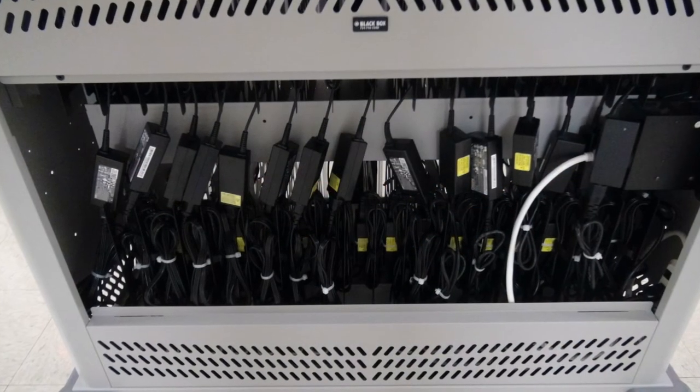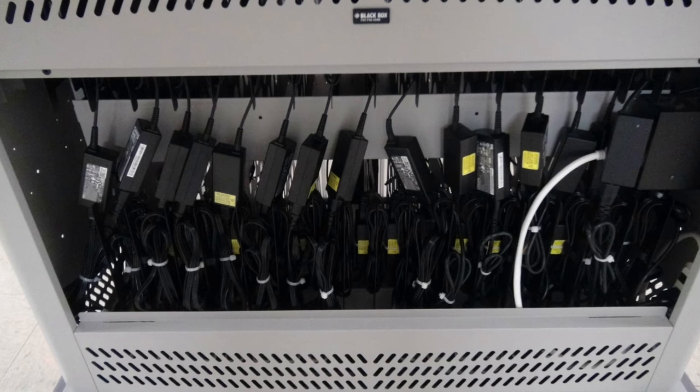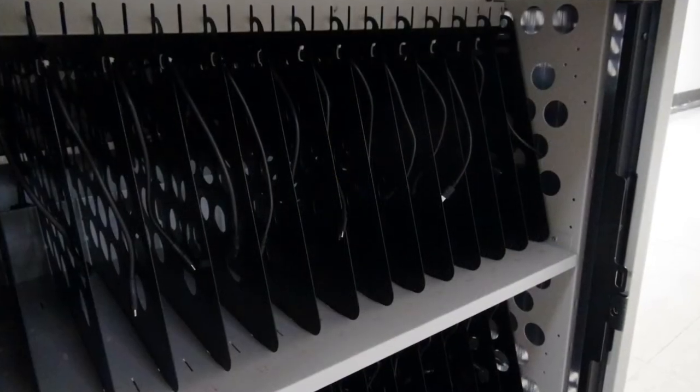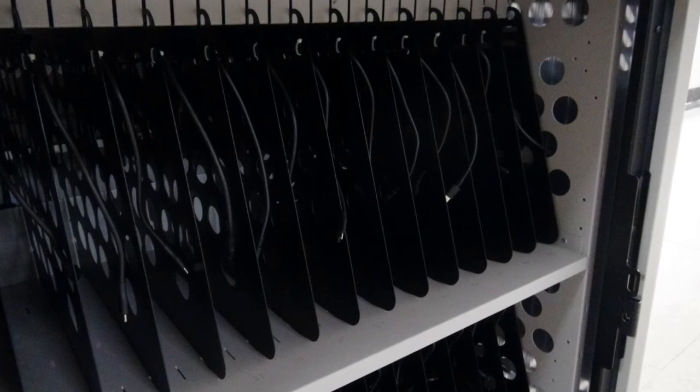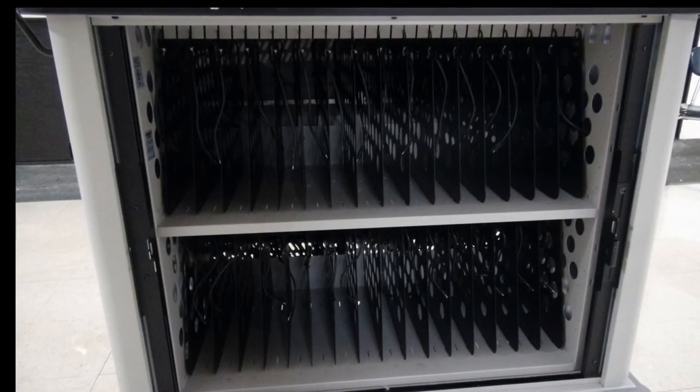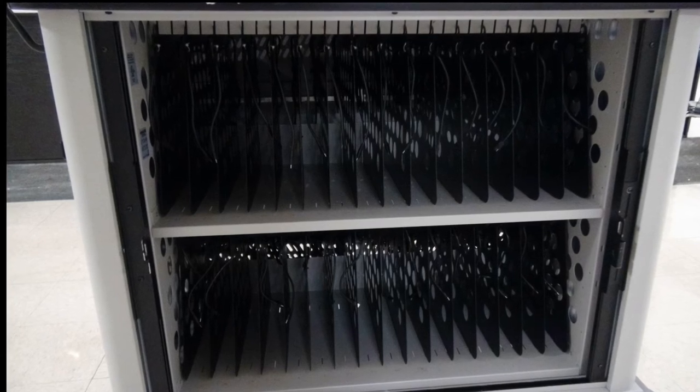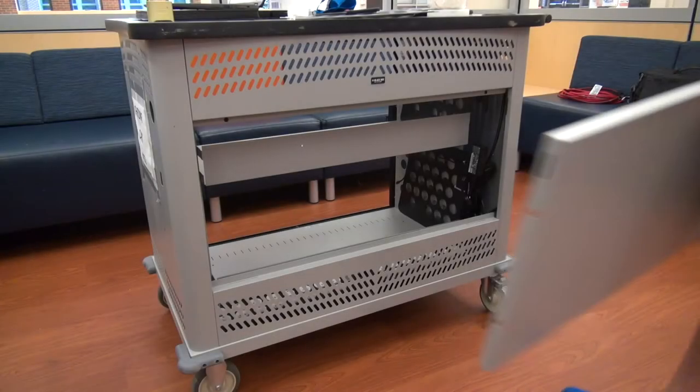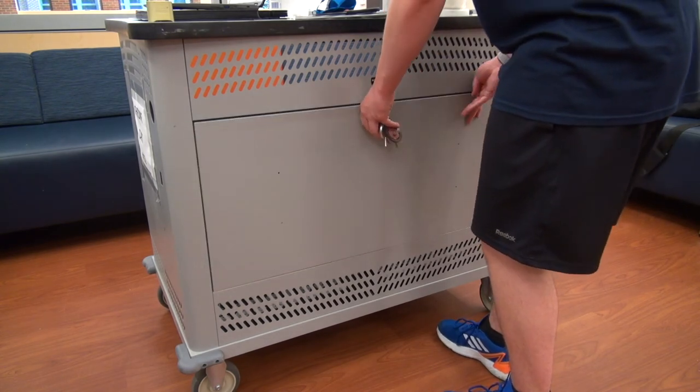Now that I've shown you how to wire and install both the top and bottom dividers, all you need to do is repeat this process until you've completely filled both rows of your cart. Finally, once all rows have been filled, you just need to relock the back of your cart.